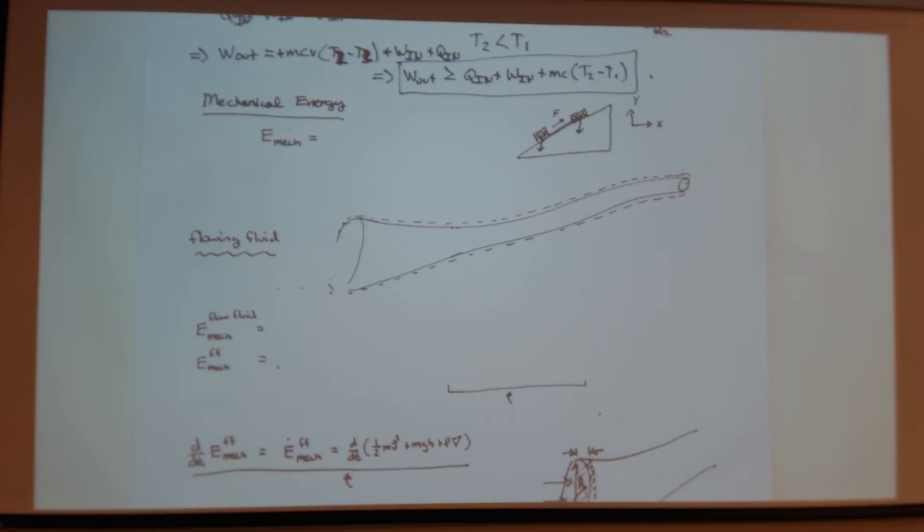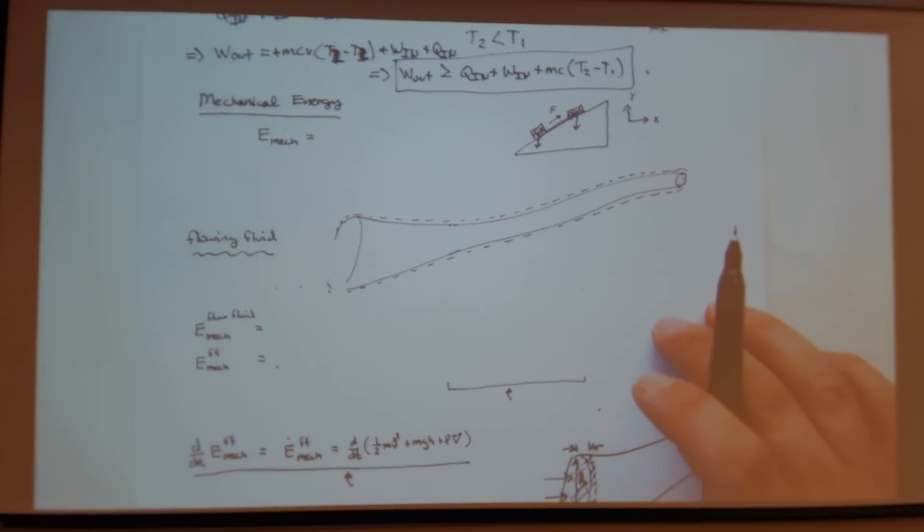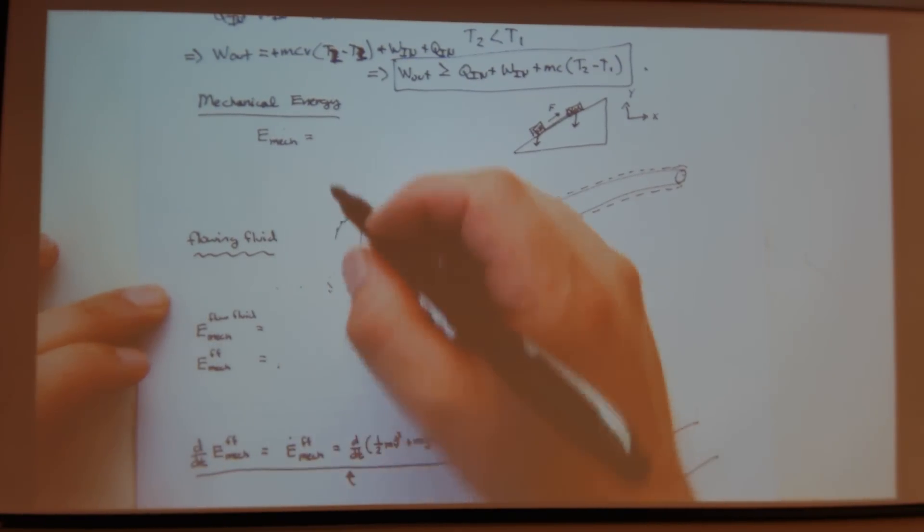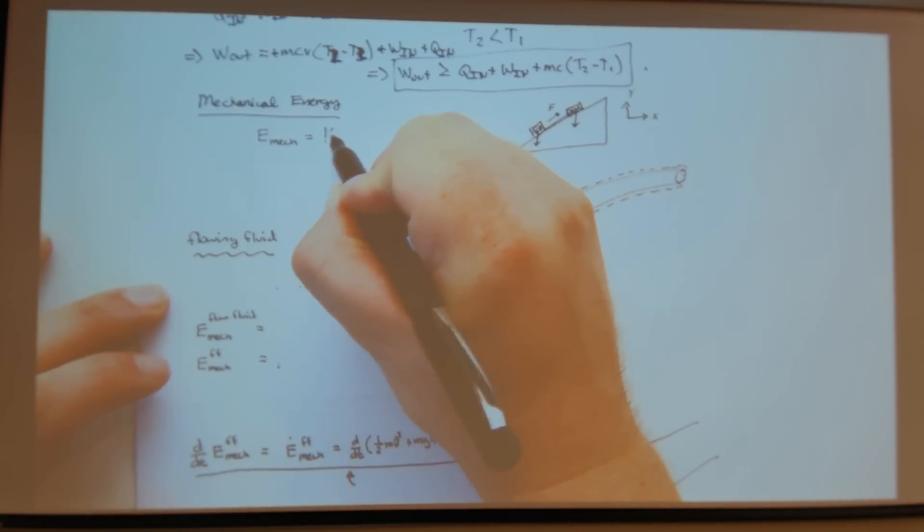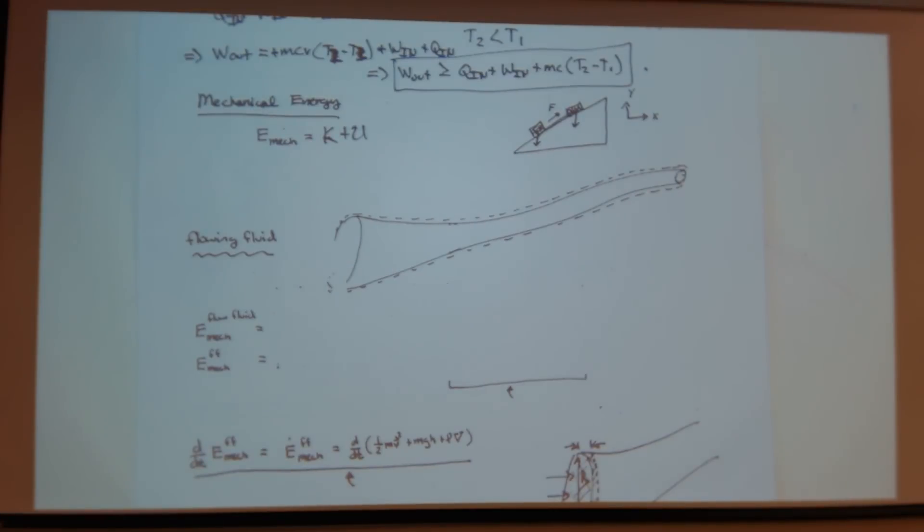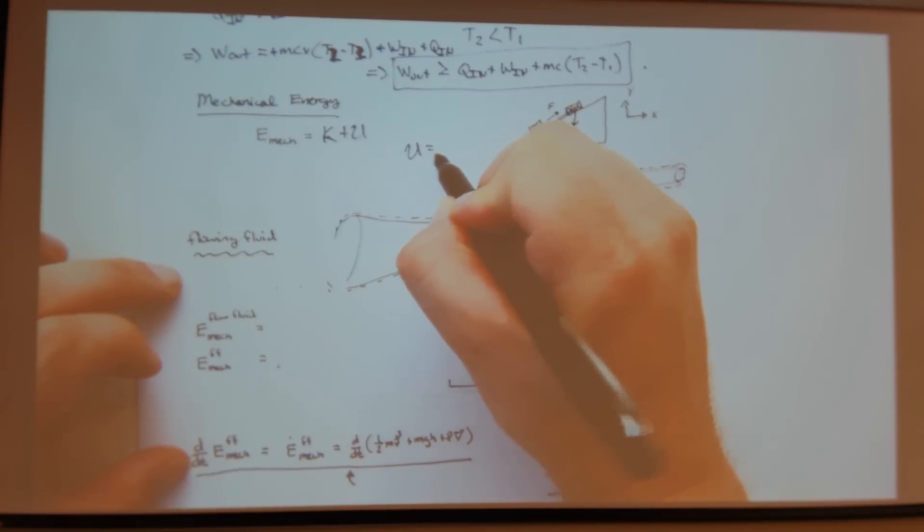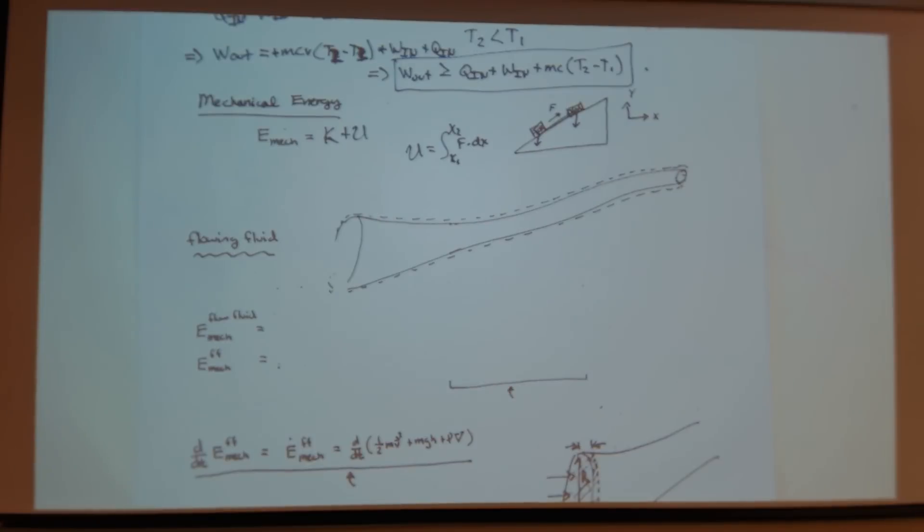The book talks about mechanical energy, so we'll cover this. Mechanical energy, we're going to describe it into two terms, a kinetic part and a potential part. The potential part is what you did in freshman physics. Force on a slope, you move it up, you can calculate change in potential energy.